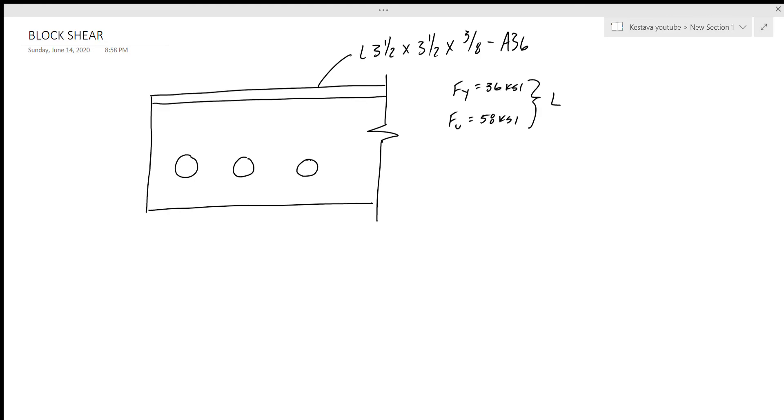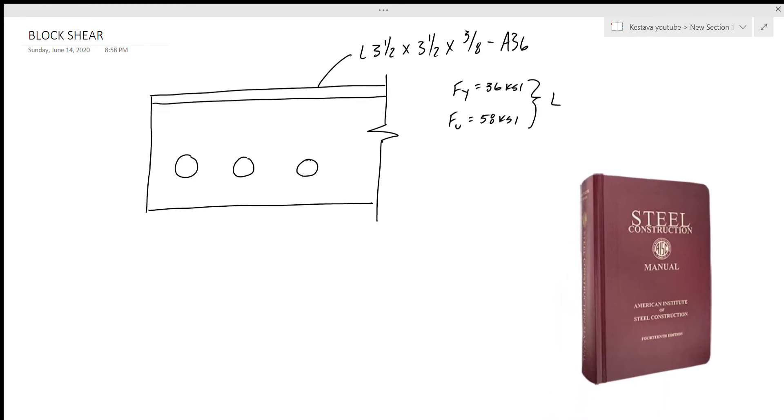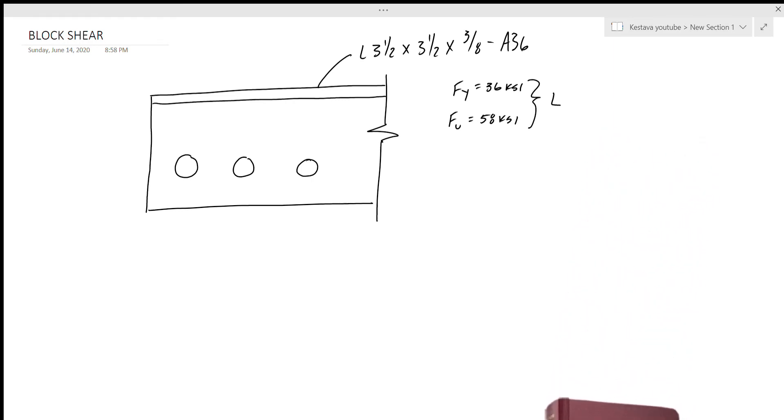That means FU is going to be 58 KSI. You can find these values based on typical L sections if we go to our AISC steel manual, table 2-4. We can see that the minimum yield stress of a typical L section is 36 KSI and the tensile stress FU is at a minimum of 58 KSI.